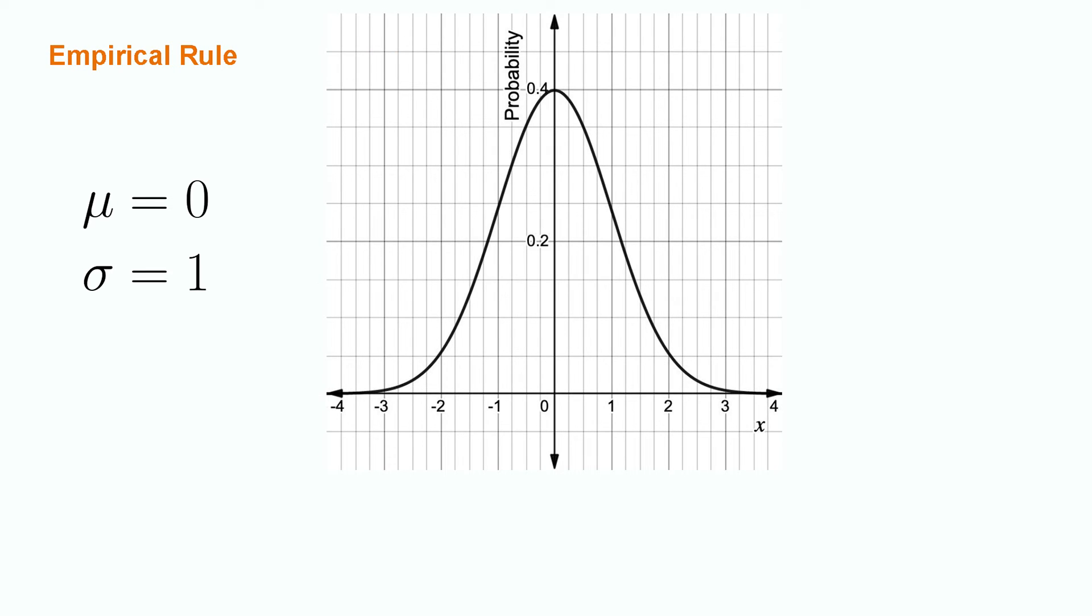Because of the ubiquity of the normal distribution, there are some useful values to remember for its probabilistic outcomes. In general, it can be nice to think about probabilities in terms of standard deviations. That is, we can talk about how unlikely an event is based on how many standard deviations away from the mean it is.